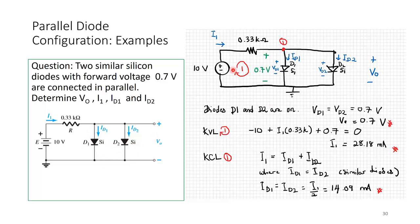Doing KVL to find I1: minus 10 plus I1 times 0.33 kilohm plus 0.7 equals 0. Therefore I1 equals 28.18 milliamps.